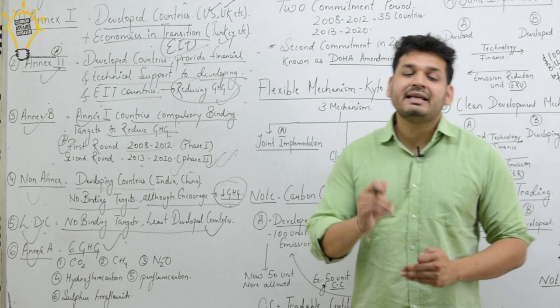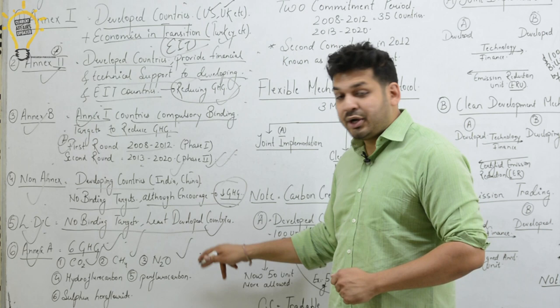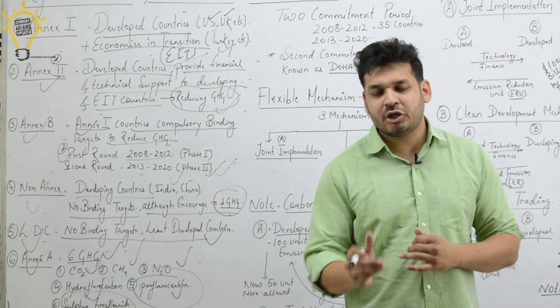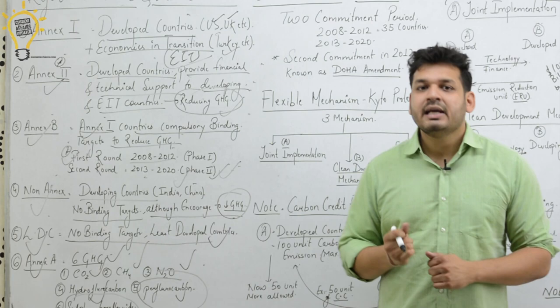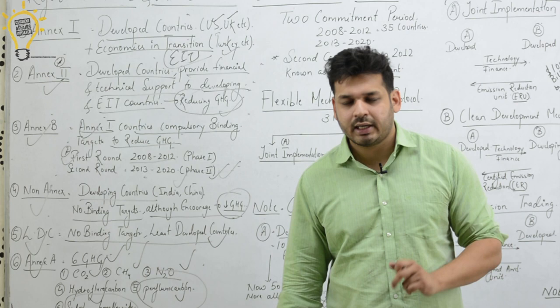The six greenhouse gases covered under the Kyoto Protocol are: first, carbon dioxide (CO2); second, methane (CH4); third, nitrous oxide (N2O); fourth, hydrofluorocarbons (HFCs); fifth, perfluorocarbons (PFCs); and sixth, sulfur hexafluoride (SF6). Note: the statement that Annex 2 countries include developing countries is wrong.